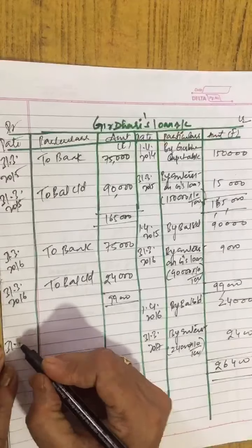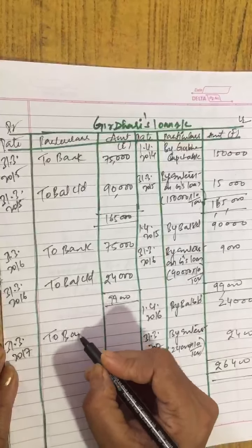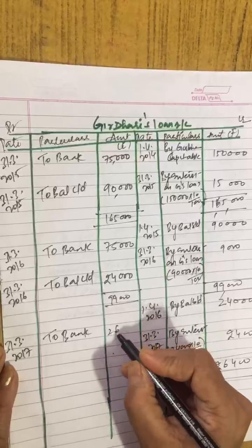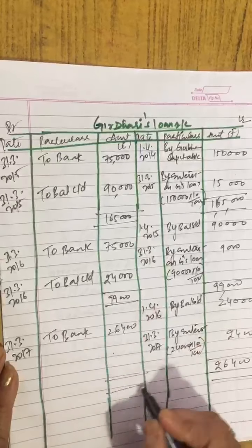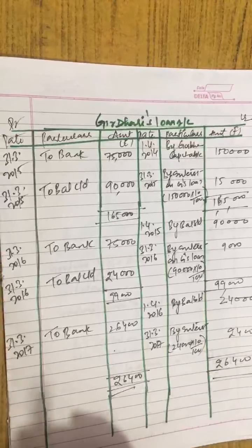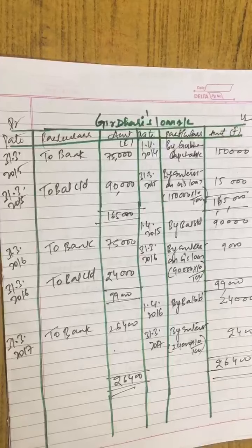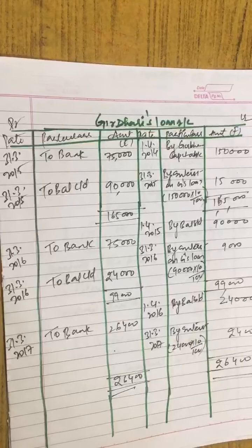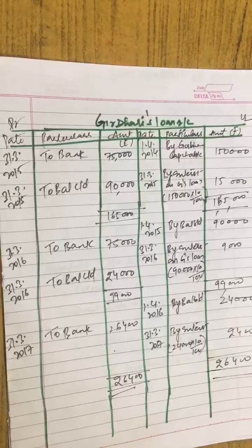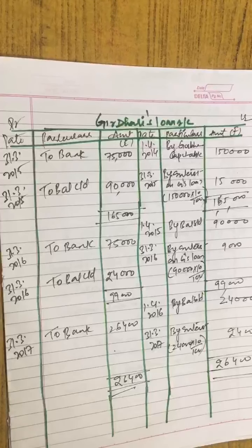31st March 2017 to bank you will pay final 26,400. This is the last installment. I hope now it's clear to you. I have done loan account for you. Long questions also done. Revaluation adjustment, all three adjustments I have done. I have done small questions for you, how to calculate the new ratio, gaining ratio.